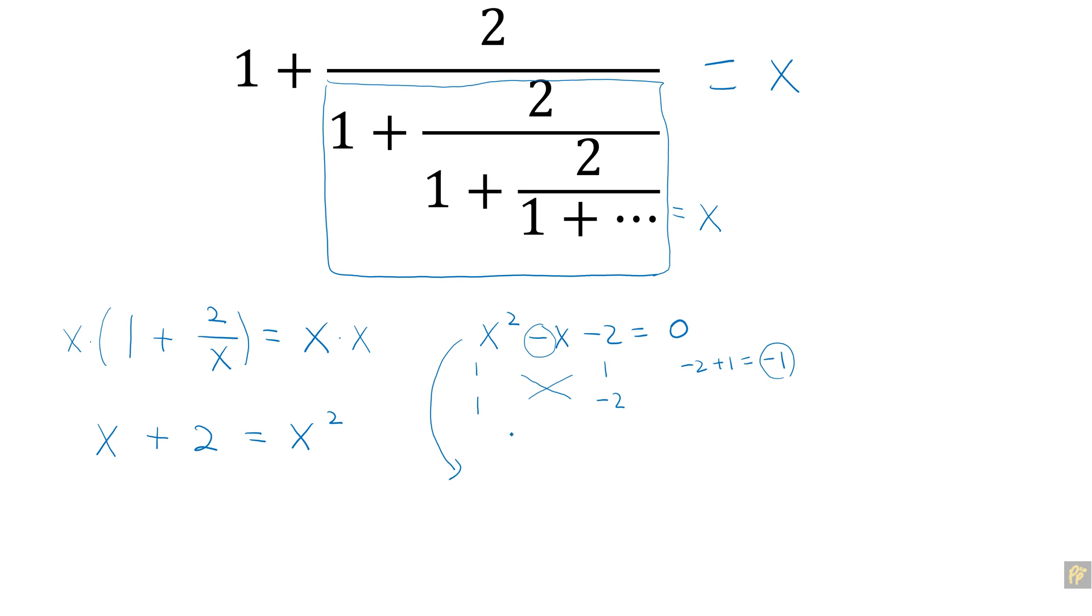So then the given quadratic expression can be x plus 1 times x minus 2 should be equal to 0. Your x can be either negative 1 or positive 2.